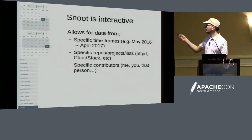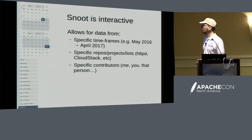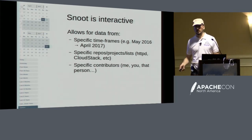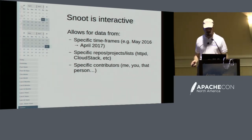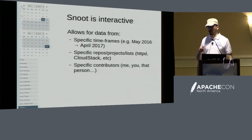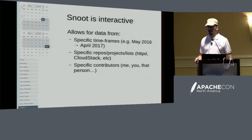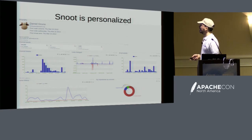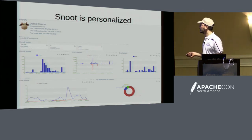It's interactive. You can go and pick any time span like May 2016 to April 2017, or a specific project, repository, bug tracker, or any specific contributors, and you can see the stats for them or the project or the repo. You can go in and see what am I doing, what's Jim doing, and how does that relate to how the project is doing. Here you can see the commits I've made — I was pretty active at some point, then kind of lost interest, then got active again.